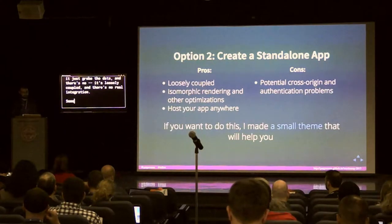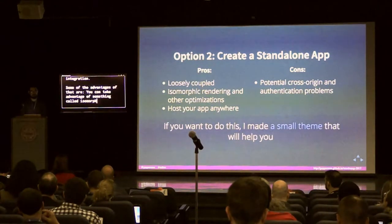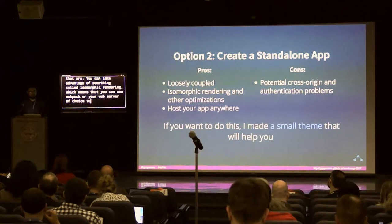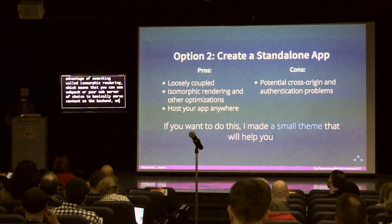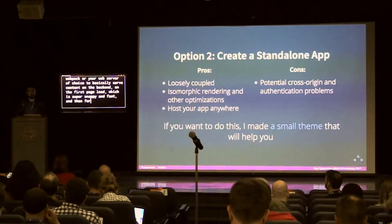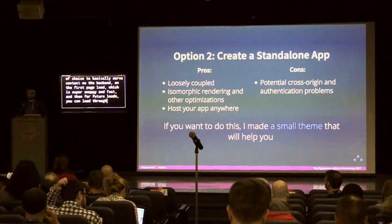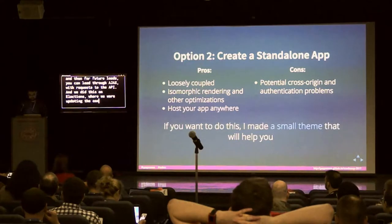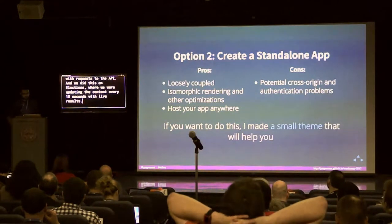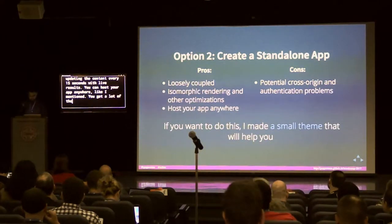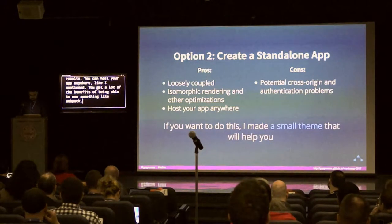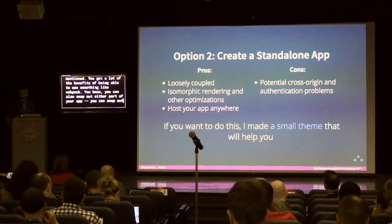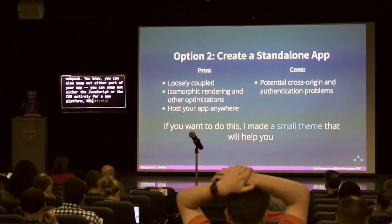The standalone app just makes requests to a WordPress environment, grabs the data, and it's loosely coupled with no real integration. Some advantages: you can take advantage of isomorphic rendering, which means you can use Webpack or your web server to serve content on the back-end on the first page load — super snappy and fast. Then for future loads, you load through Ajax with requests to the API. We did this on elections where we were updating content every 15 seconds with live results.